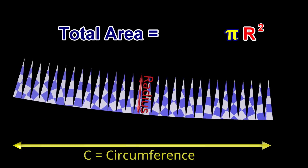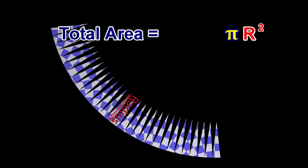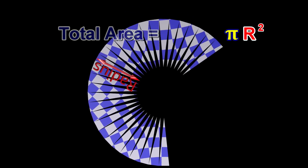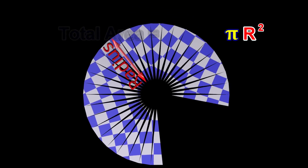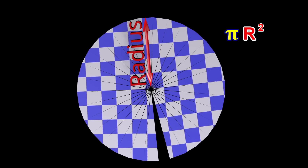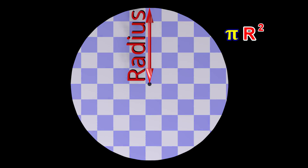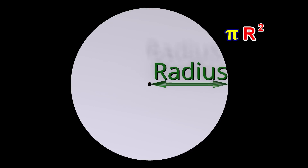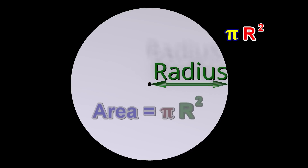The sum of the areas of all the triangles is therefore equal to pi multiplied by the radius squared. And the sum of the areas of all the triangles is exactly equal to the area of the circle. Therefore, the area of a circle is exactly equal to pi multiplied by the radius squared.